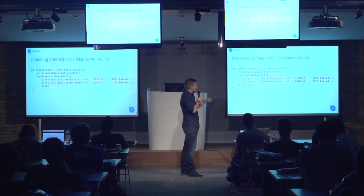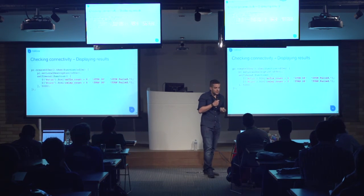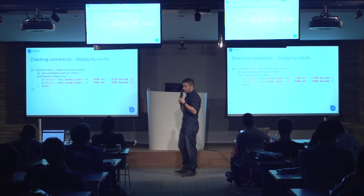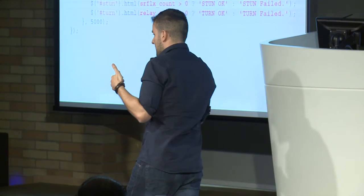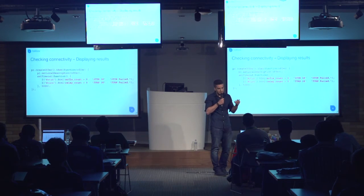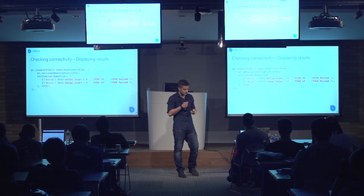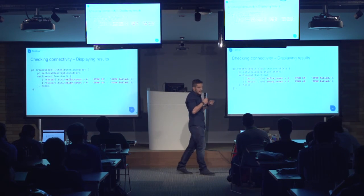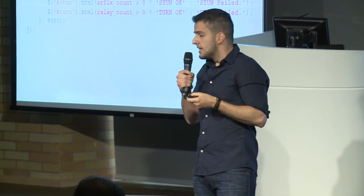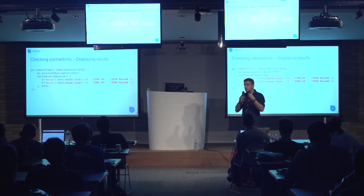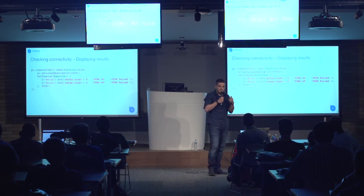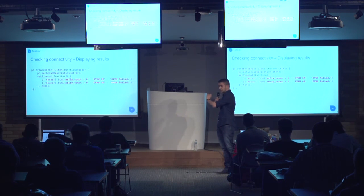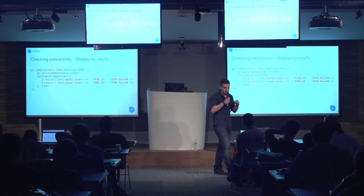Once I have those numbers, I can evaluate my test. When I create my offer, I see how many reflexive and relay candidates I get. If I get relay candidates, it means my connectivity to the TURN server is working fine; if not, it's not working. The same applies to reflexive candidates for the STUN server. Note that this sample doesn't cover checking for protocols — it can also happen that your firewall blocks UDP traffic. You could deploy a TURN server on TCP, and you can implement something more complex to also verify things like that.